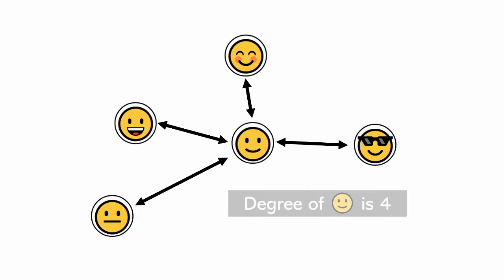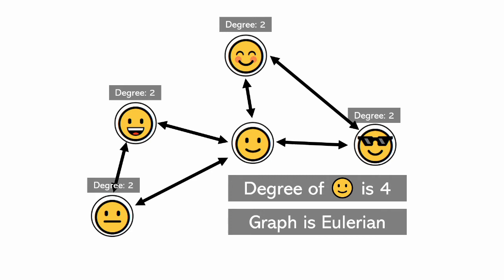But how do we figure out if a graph is Eulerian without just guessing and checking? For this, we will need to look at the degree of each vertex, which is the number of edges attached to a specific vertex. If the graph has vertices that are all of even degree, the graph is Eulerian.